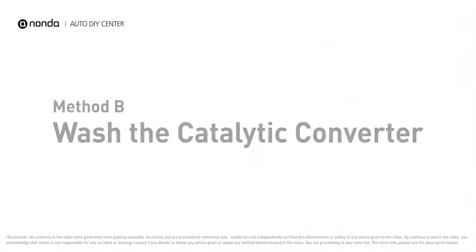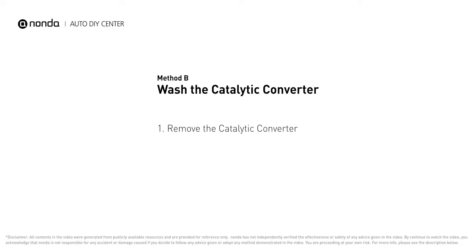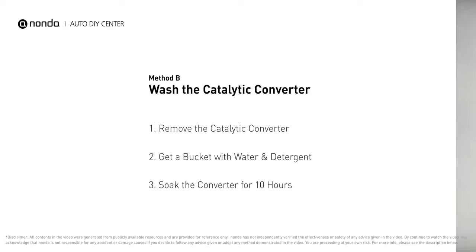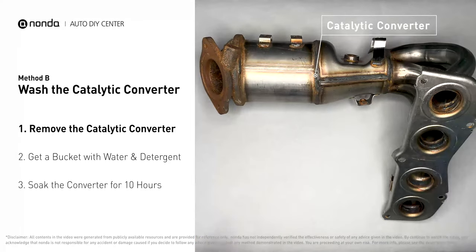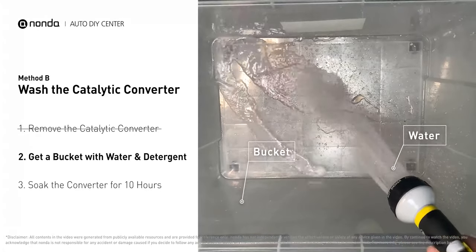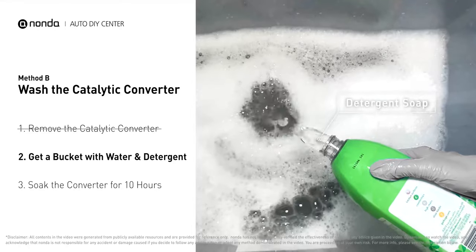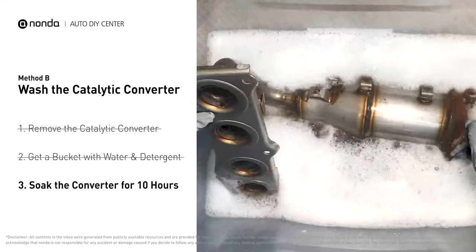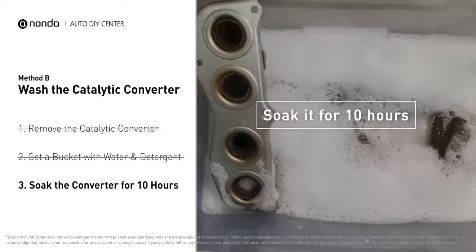Method B: wash the catalytic converter. The first thing you need to do is remove the catalytic converter from your vehicle. Then get a bucket, put some detergent soap in it, and foam it up. Put the catalytic converter into the solution and soak it for 10 hours to remove all the crud that's inside of it.